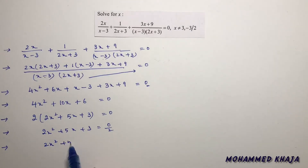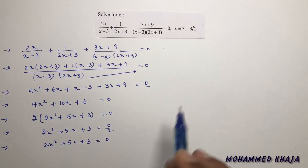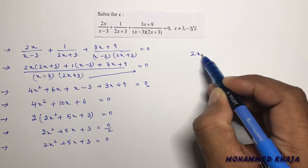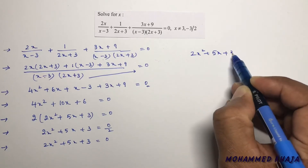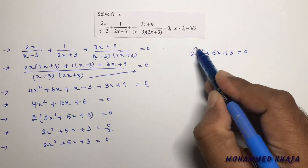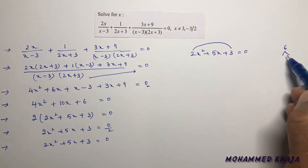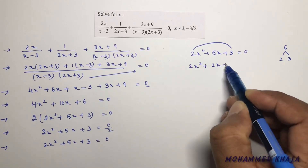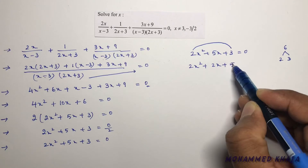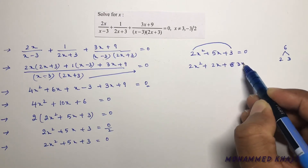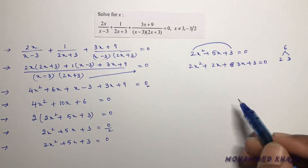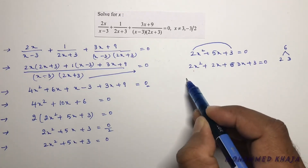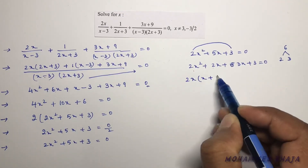Now I'll factorize 2x² + 5x + 3 = 0. Splitting the middle term: 2x² + 2x + 3x + 3 = 0, because 2 + 3 = 5. In the first two terms, take 2x common to get 2x(x + 1). In the next two terms, take 3 common to get 3(x + 1), so we have 2x(x+1) + 3(x+1) = 0.